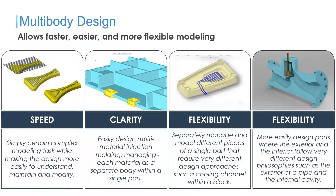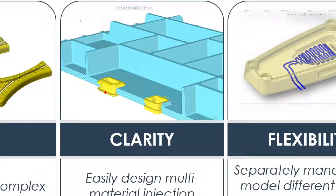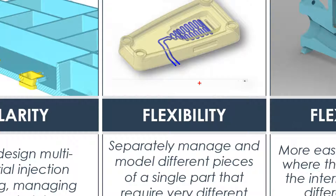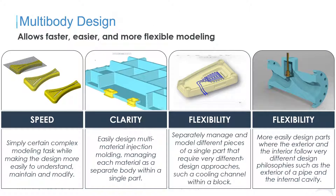The speed with which you can create geometry using bodies is much improved over previous workarounds using quilts, surfacing, or multiple workarounds. Now we can use bodies directly. For a multi-material injection mold with an overmold and main body, you can have two bodies. Bodies can also be used for creating cooling channels and for fluid flow simulation. Let me demonstrate some of these use cases.